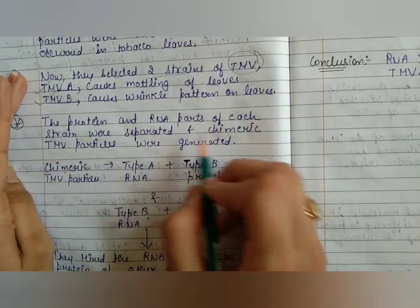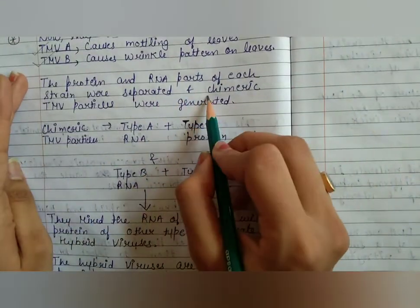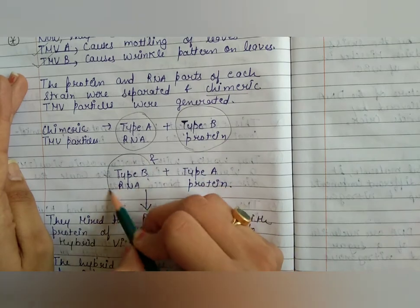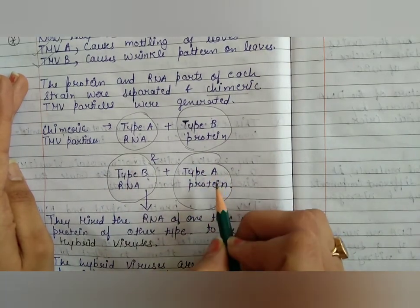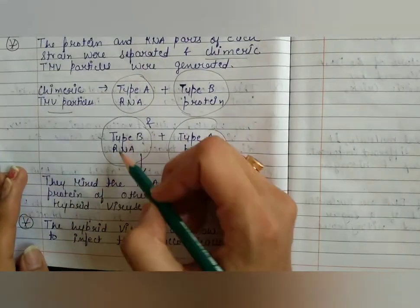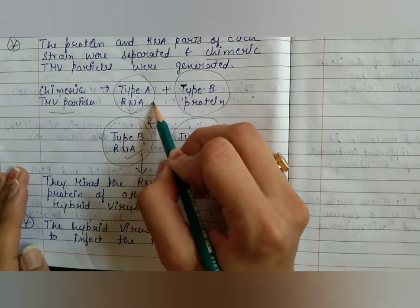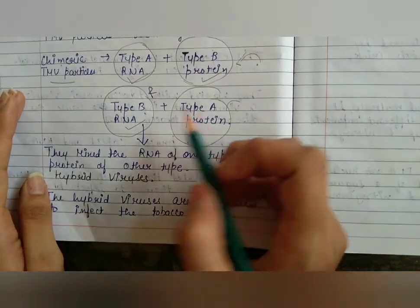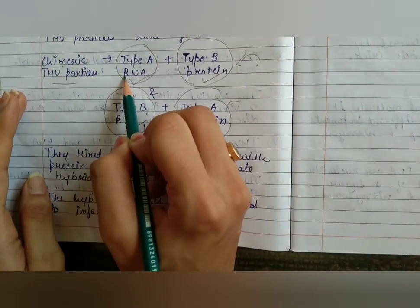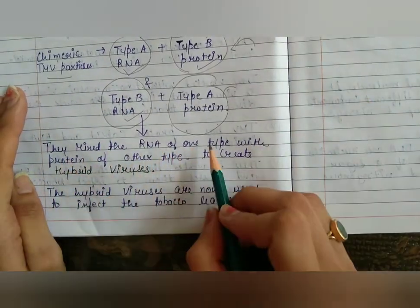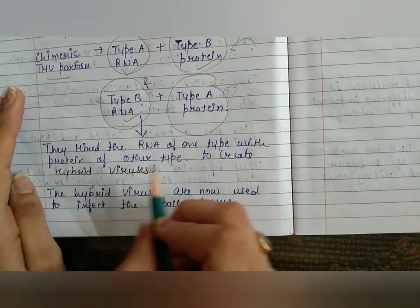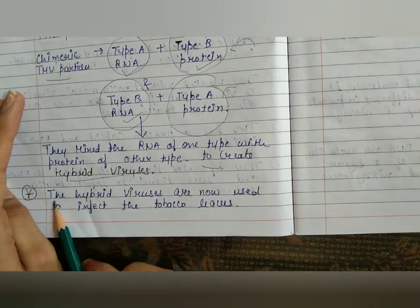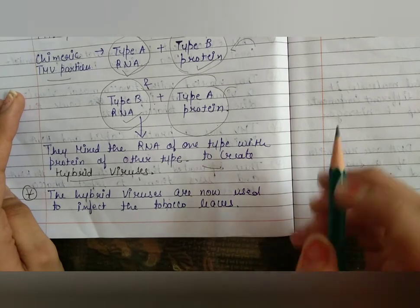The protein and RNA parts of each strain were separated and chimeric TMV particles were generated — combining RNA of one type with protein of the other type to create hybrid viruses. These hybrid viruses were then used to infect the tobacco leaves.